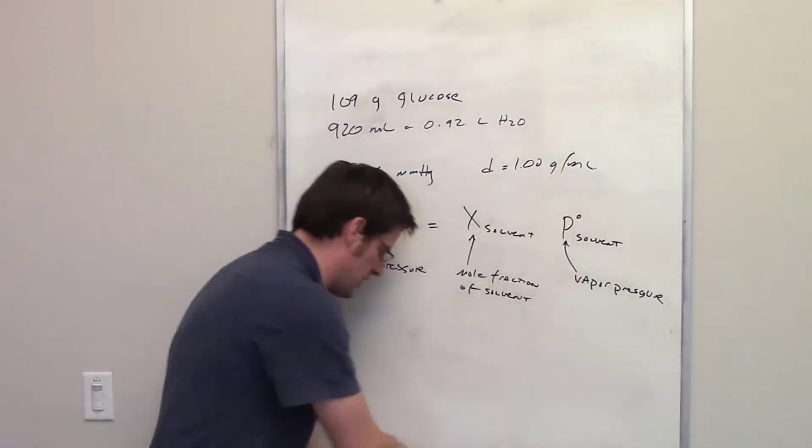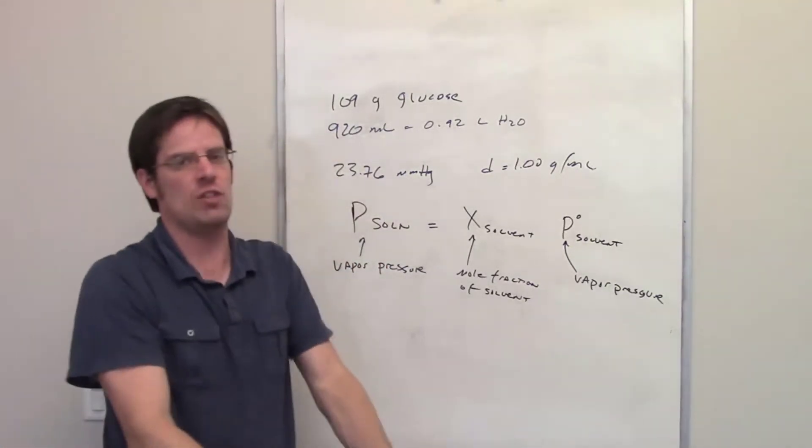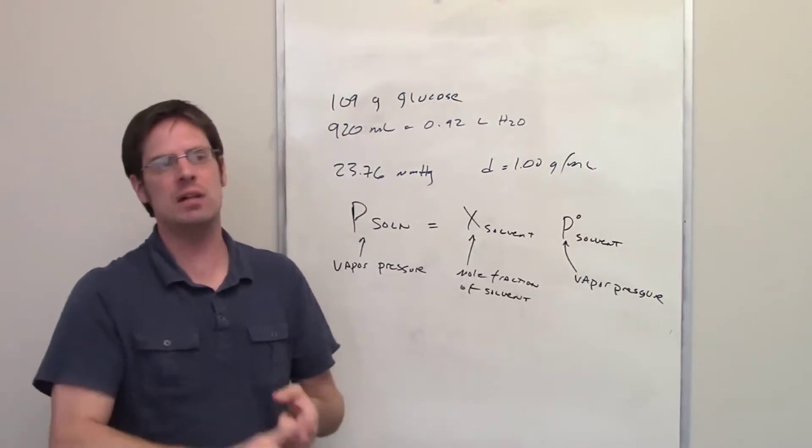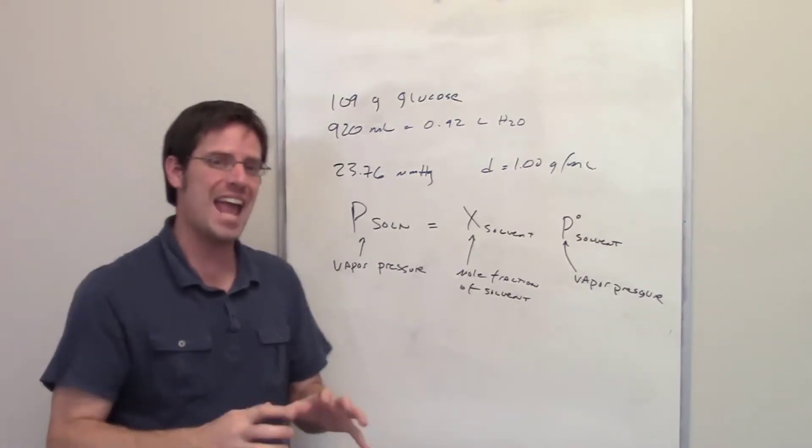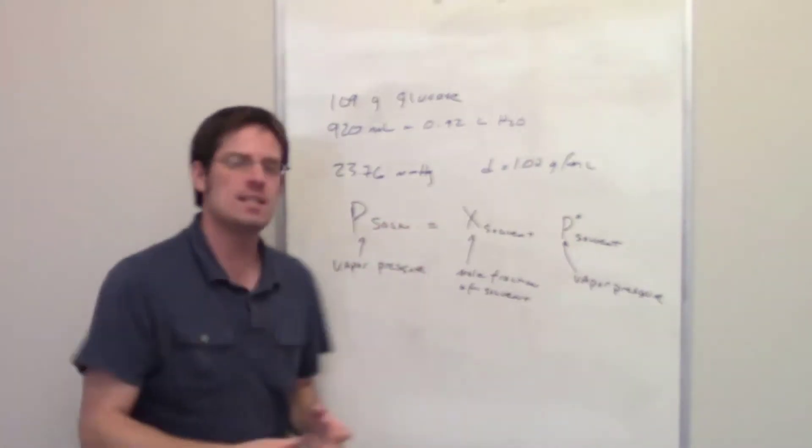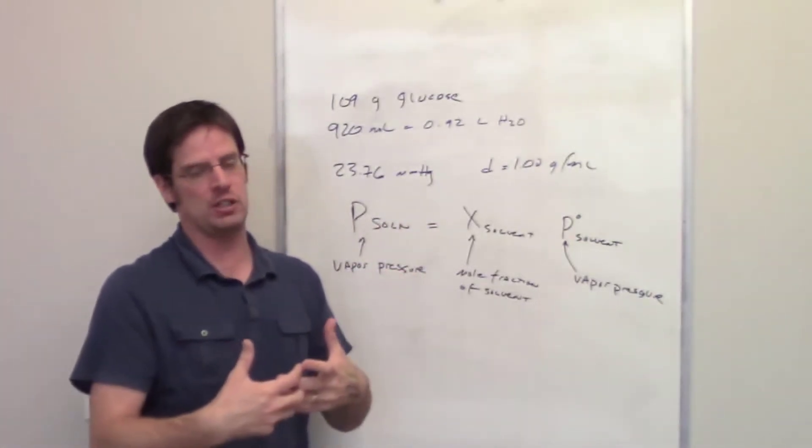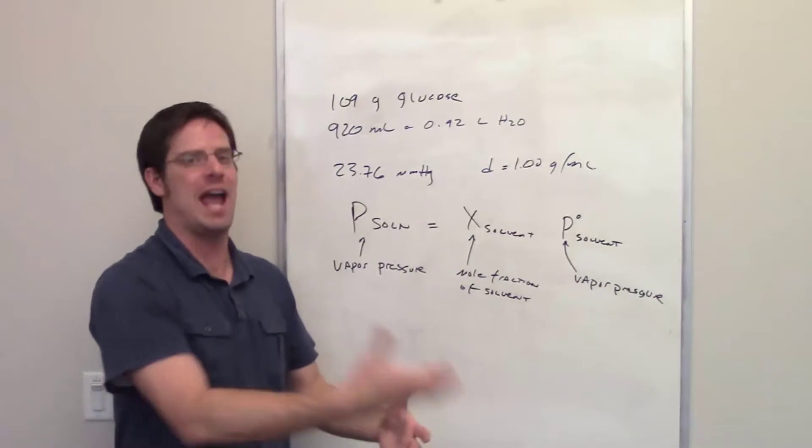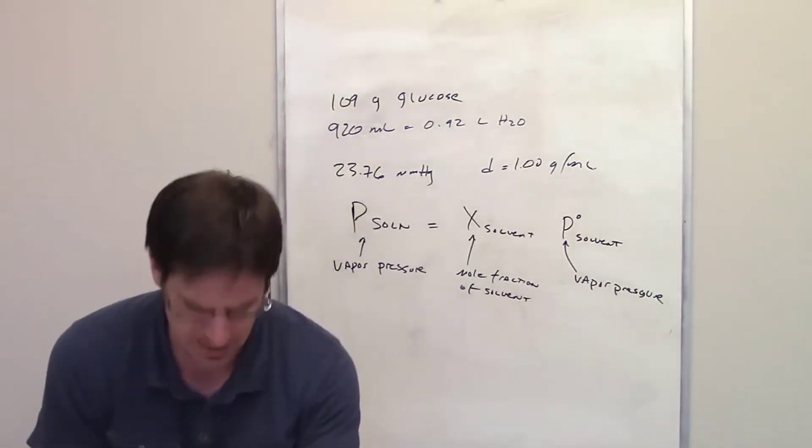When we dissolve something in a solvent, it changes the melting point, the boiling point, and the vapor pressure of that solvent. So this equation is used to help us determine what the new vapor pressure of that solvent would be after adding a solute.